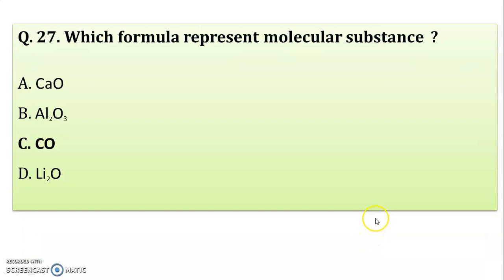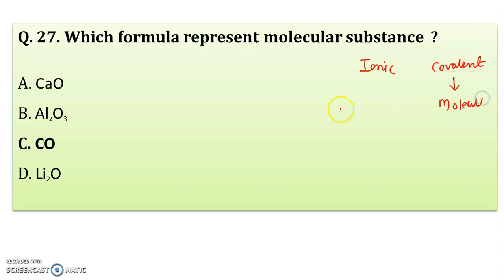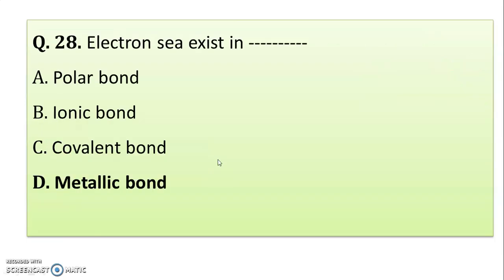Next question: which formula represents a molecular substance? Remember, ionic substances contain ions, while covalent bonds form molecular substances. CaO is ionic — wrong. Al2O3 is also ionic — wrong. Li2O is also ionic — wrong. Carbon monoxide, CO, is the molecular substance. So Option C is correct.